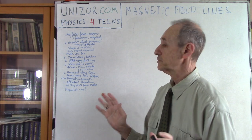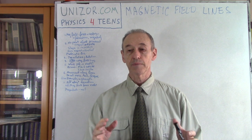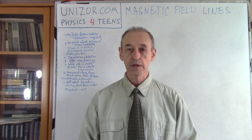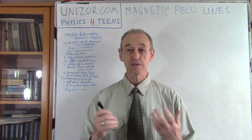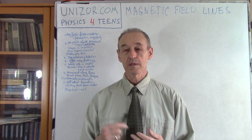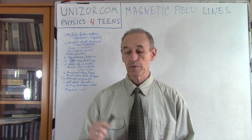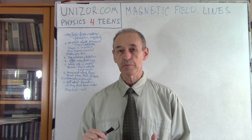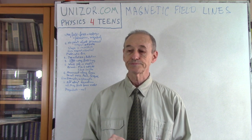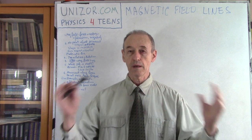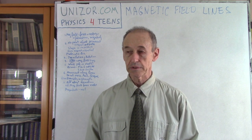If something is happening in the field, it means there are some forces which are acting. The force which is exerted by the source of magnetic field through the concept of the field on some other object — a probe object. Force is a vector, which has two characteristics: magnitude and direction. Today we will mostly talk about direction of the force around the source of magnetic field.